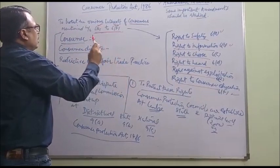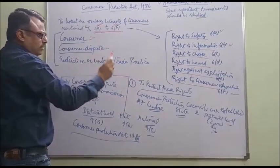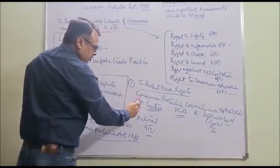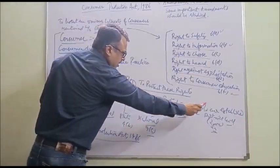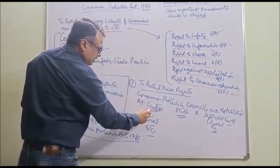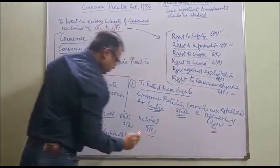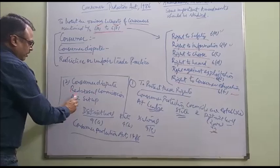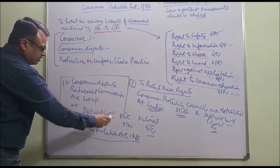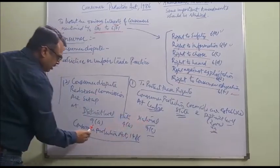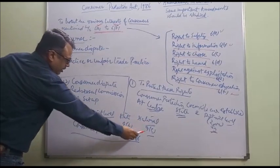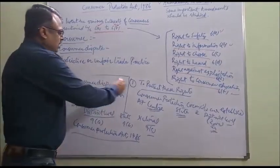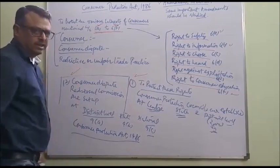To protect the rights of the consumer, two steps are mainly taken. First, Consumer Protection Councils are established at Centre, State and District level. Second, Consumer Dispute Redressal Commissions are set up at District level, State level and National level under Sections 9a, 9b and 9c of Consumer Protection Act 1986. I will discuss these two topics in detail in the next lecture.